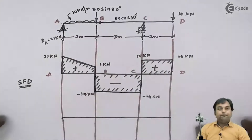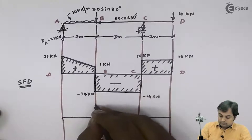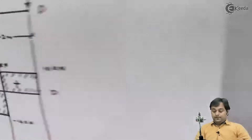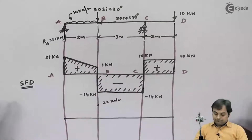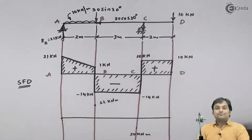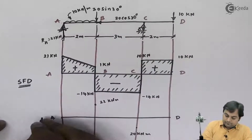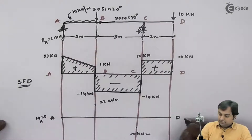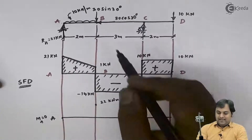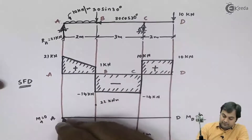Now I can draw the bending moment diagram. Bending moment at A is zero, bending moment at B is 22 kilonewton meter, bending moment at C is minus 20 kilonewton meter, and at A and D they are zero. Between A to B there is UDL, so shear force was an inclined line and hence bending moment should be a parabolic curve.